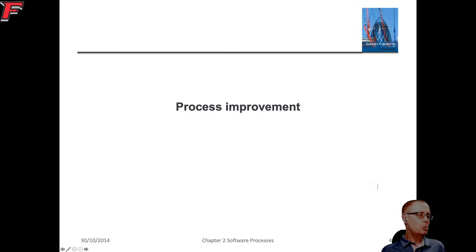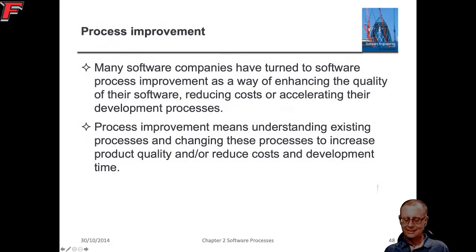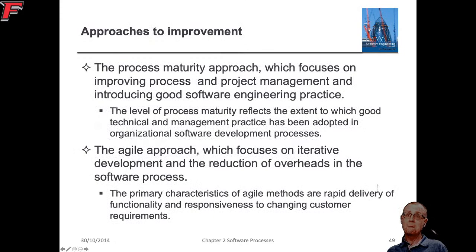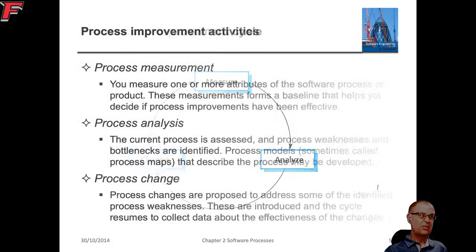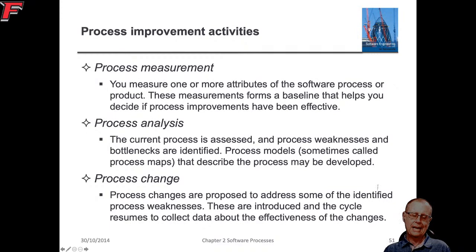If you're running a process, you want to be able to improve it. To improve it you need to know how well you're doing, so you need to understand the existing processes and measure them. The key piece — what my kids learned in kindergarten — is plan, do, review. In process improvement we measure, analyze, and change: first you measure the process (hours, dollars, lines of code), then you analyze how well the process is working, and then you propose a change to hopefully improve the measurements.